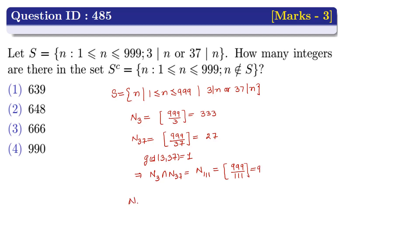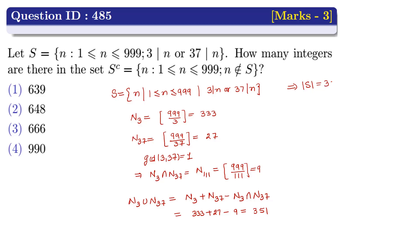Now, the number of elements divisible by 3 or divisible by 37 equals the number divisible by 3, plus the number divisible by 37, minus the number divisible by both 3 and 37. This is equal to 333 + 27 − 9 = 351. This implies the cardinality of set S is 351. The cardinality of S complement equals total elements minus |S|, which equals 999 − 351 = 648.